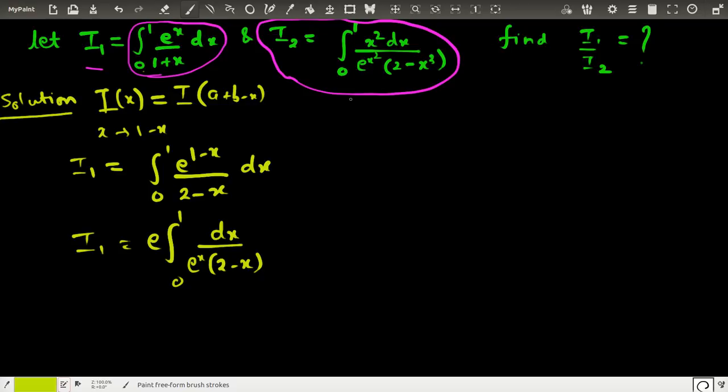Can we do a similar thing here? We'll first have to reduce this integration because the powers are in cubes. Here we can put x³ = t, so I get 3x²dx = dt.